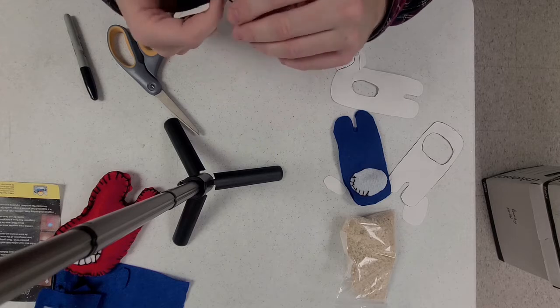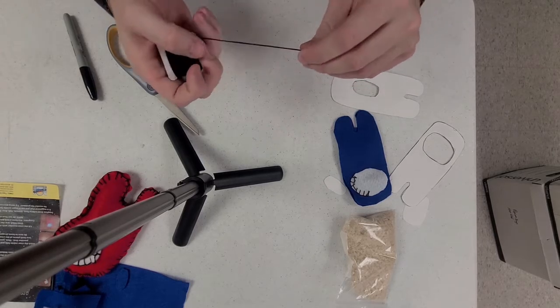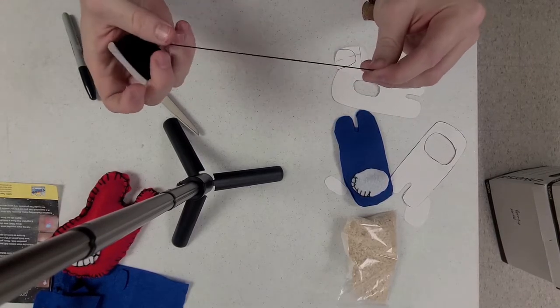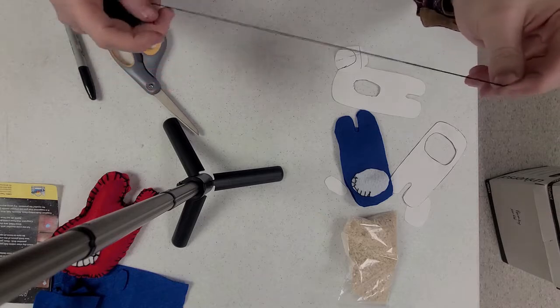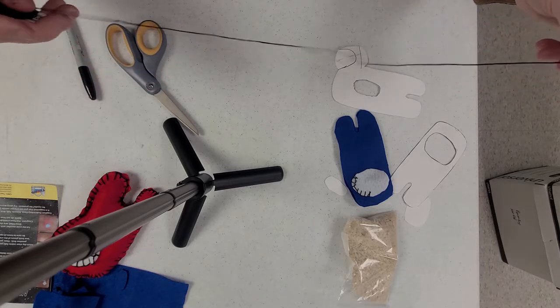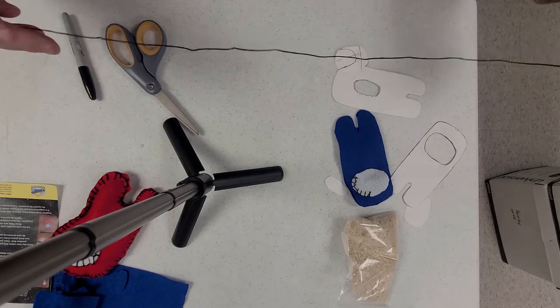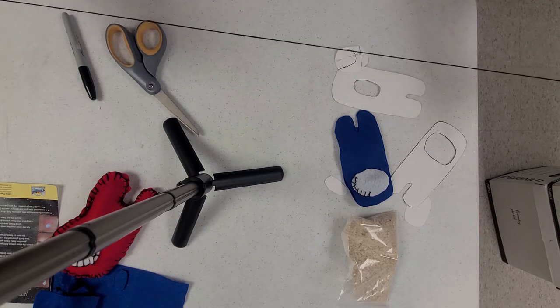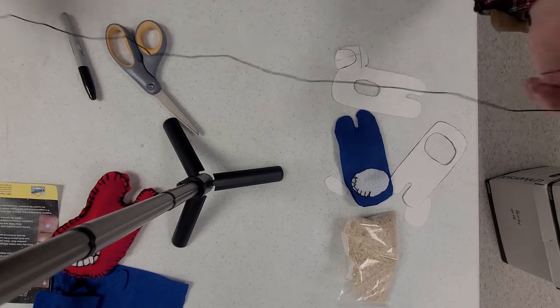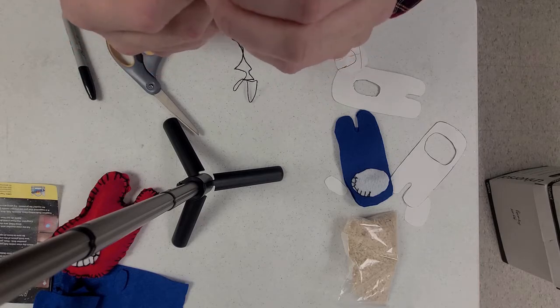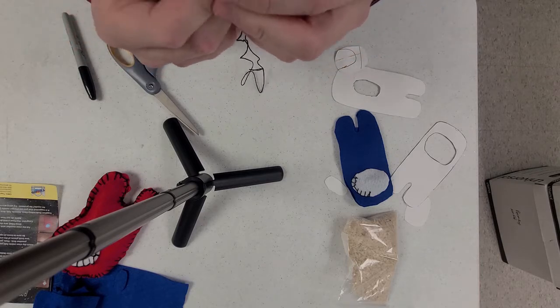One of the materials that I mentioned before was embroidery floss. And this is a really special kind of string. It's made up of five or six individual strands of string. And the purpose of it is to actually find the end and separate out a few of the strands to use.